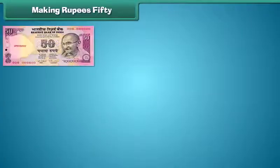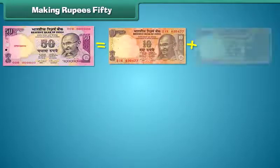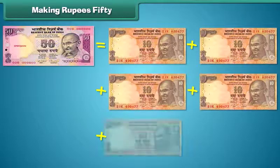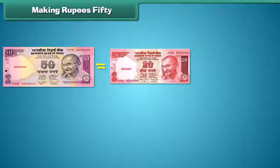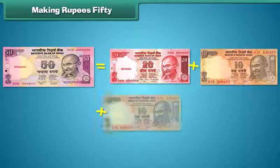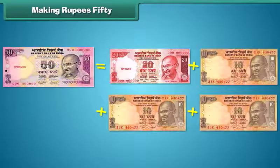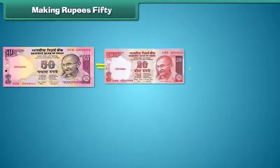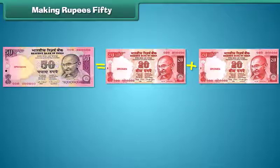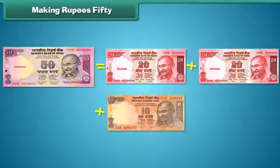Similarly, a 50 rupees note is equal to the sum of 5 ten-rupee notes. A 50 rupees note is equal to the sum of 1 twenty-rupee note and 3 ten-rupee notes. And also 1 ten-rupee note.